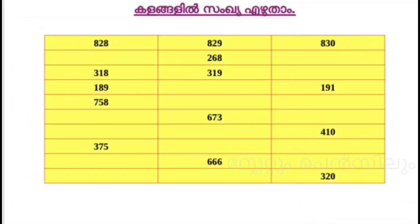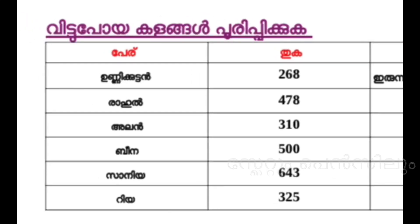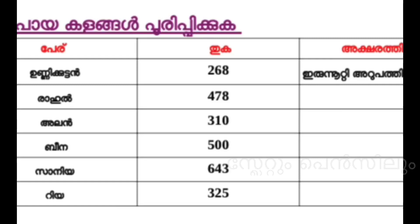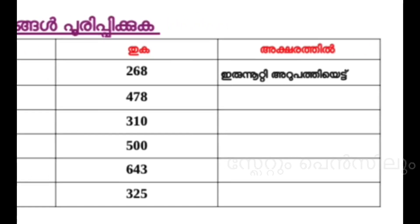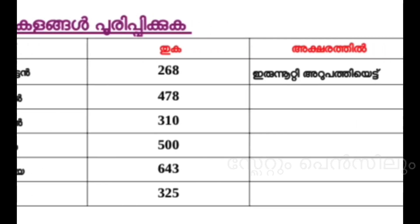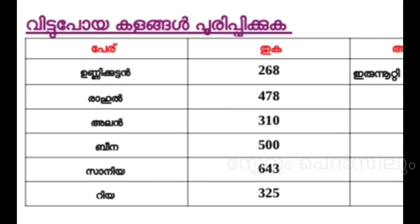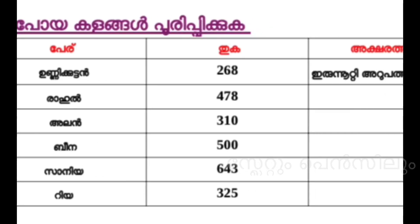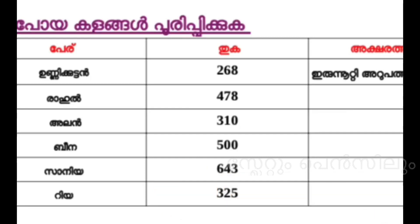Do not understand. There is a name for the one. If you write the name, the name is 288. If you write the name, the name is 278. If you write the name, the name is 310. You can write it in the same format.